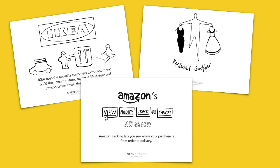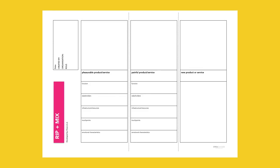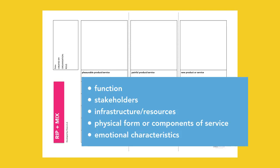Participants are given cards with a drawing of a pleasurable product or service. We now have cards of over 50 different pleasurable services, from listening to the radio in the car to a cruise down the Norwegian fjords, from Amazon tracking to a personal shopper. These are quickly analysed using the RIP & MIX worksheet under the categories of function, stakeholders, infrastructure resources, physical formal components of the service and emotional characteristics.